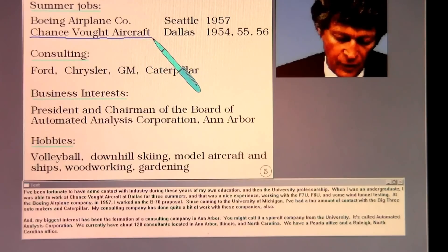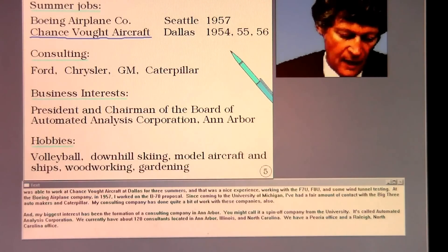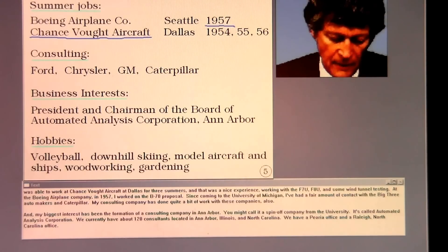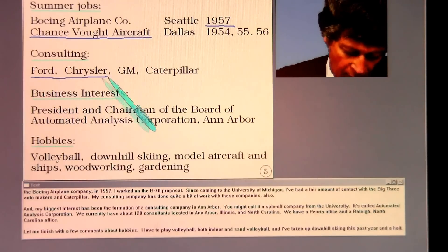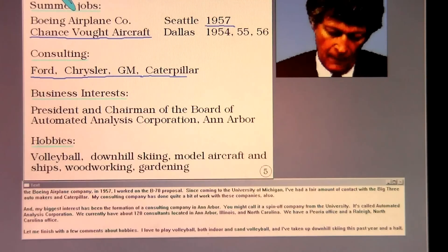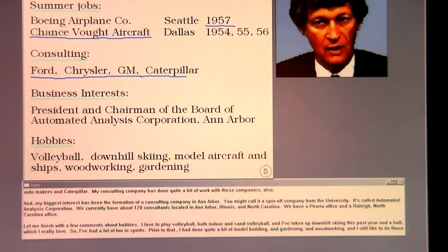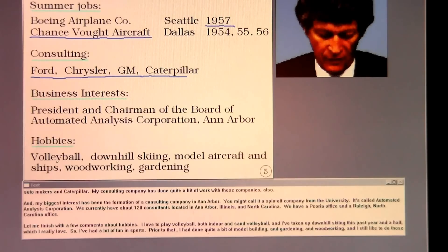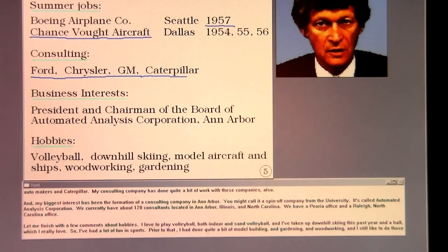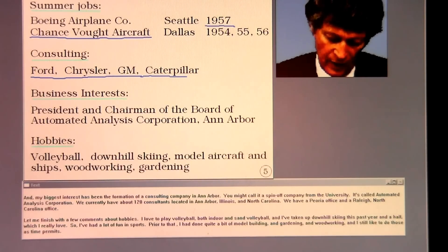When I was an undergraduate, I was able to work at Chance Vought Aircraft in Dallas for three summers, and that was a nice experience working with the F-7U, F-8U, and some wind tunnel testing. At the Boeing Airplane Company in 1957, I worked on the B-70 proposal. Since coming to the University of Michigan, I've had a fair amount of contact with the big three automakers and Caterpillar. My consulting company has done quite a bit of work with these companies also. My biggest interest has indeed been the formation of a consulting company in Ann Arbor, a spin-off company from the university called Automated Analysis Corporation. We currently have about 120 consultants located in Ann Arbor, Illinois, and North Carolina.